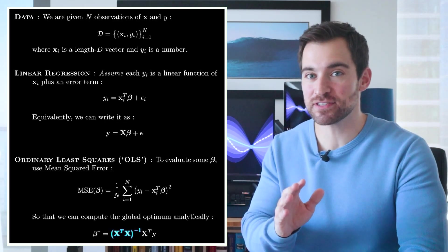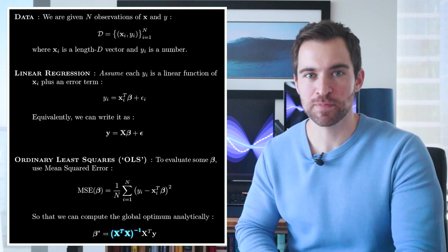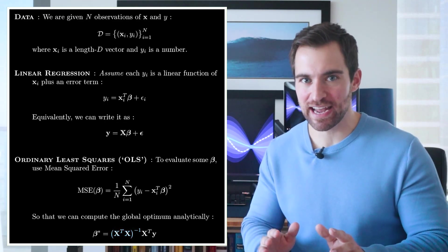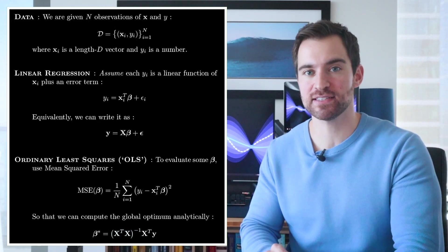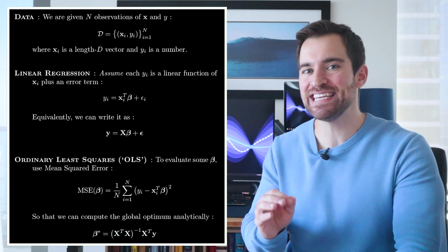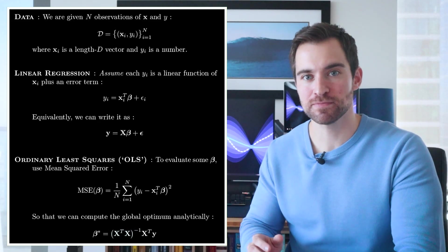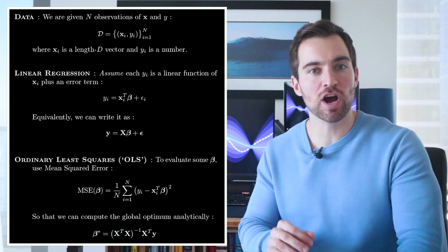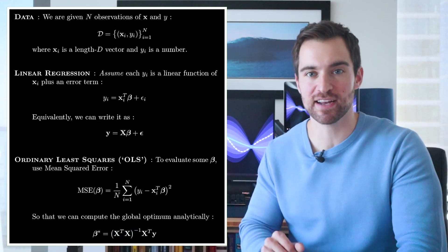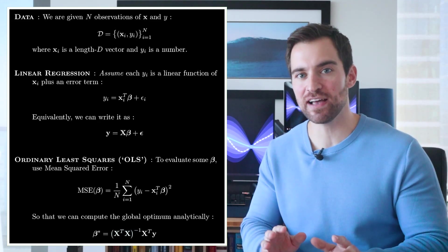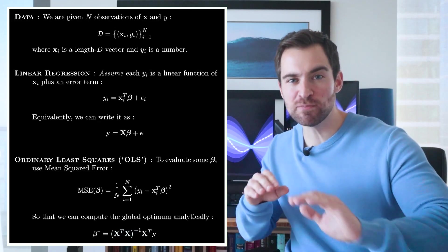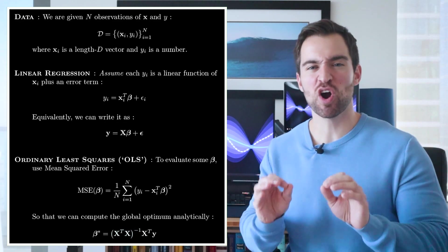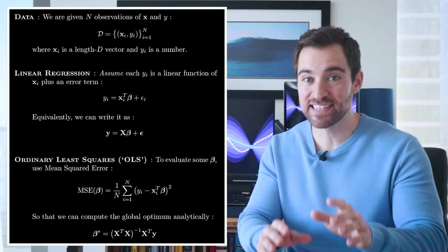First, you'll see the inverse of x transpose x, which means that thing needs to be invertible. For that to be the case, we require a few things on x. First, there needs to be at least as many rows as there are columns. Second, no column can be a linear combination of any others. For example, the third column couldn't be two times the first minus the second. If either of these conditions are violated, then you effectively have whole subspace of coefficients which optimize mean squared error. And therefore, our equation doesn't know where to point.